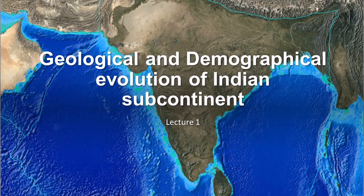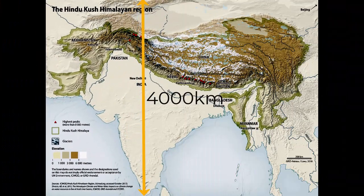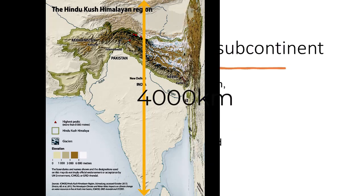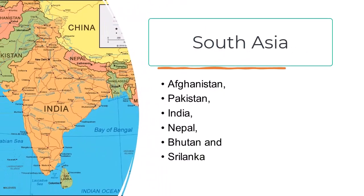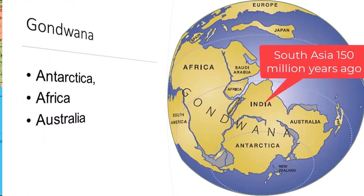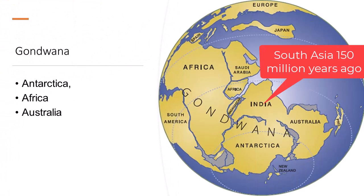To give a perspective of the size of the Indian subcontinent, it extends 4,000 km from north to south. About 150 million years ago, what we call South Asia — which basically comprises Afghanistan, Pakistan, India, Nepal, Bhutan and Sri Lanka — were located near Earth's South Pole, attached to Antarctica, Africa and Australia, all part of the supercontinent Gondwana.